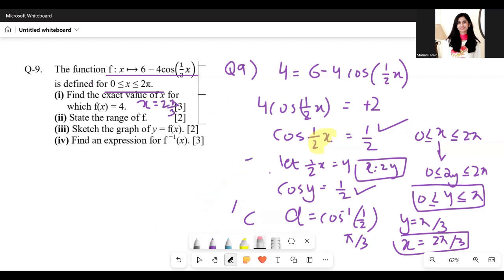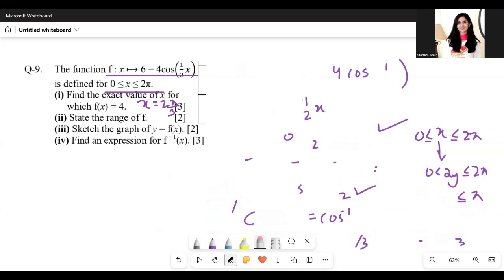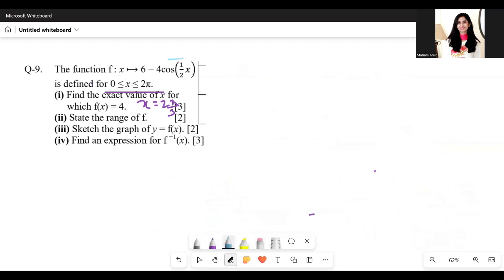Next we have to state the range of f. If you look at f(x), it has the function cos half x in it, and from the graph of cos half x we know that its maximum value is 1, its minimum value is minus 1. So we'll find the highest and lowest value of f(x) by replacing cos half x with 1 and cos half x with minus 1. We get 2 and 10. So the range of f(x) is between 2 to 10.